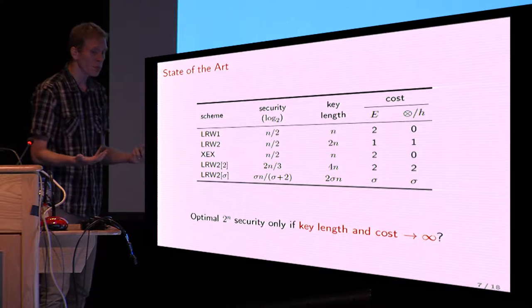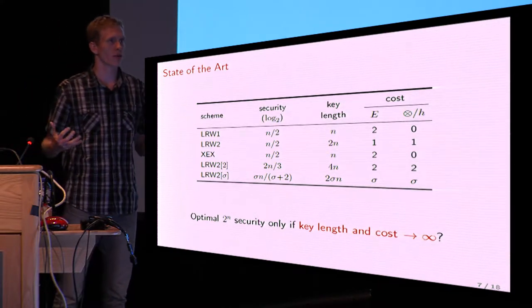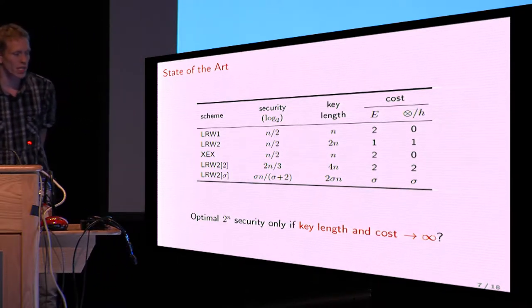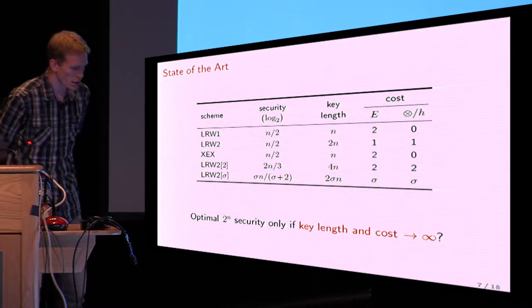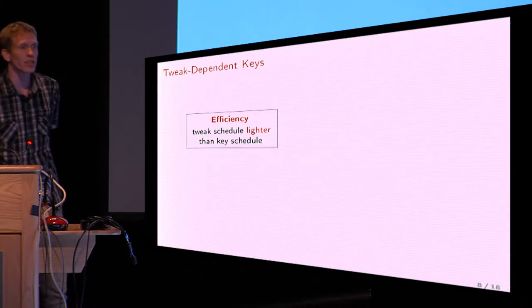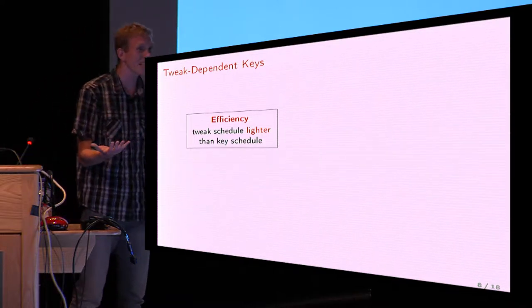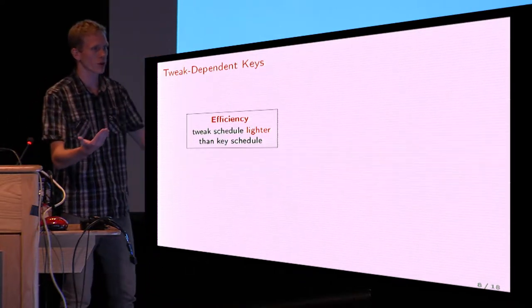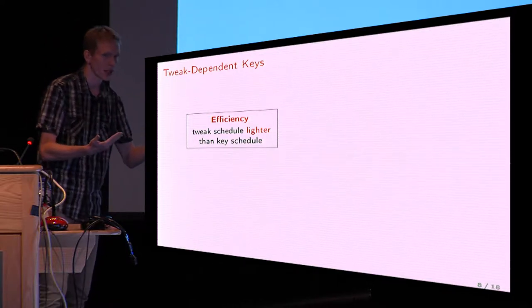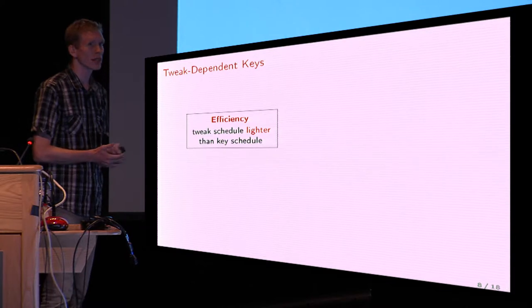Can we get an optimally secure scheme which is reasonably cheap? To address this, we look at a slightly different approach. In the original formalization of Liskov et al. on tweakable block ciphers, they suggested the key is secret and stays the same for a long time, while the tweak changes many times. So for efficiency reasons, changing the tweak should be cheaper than changing the key.